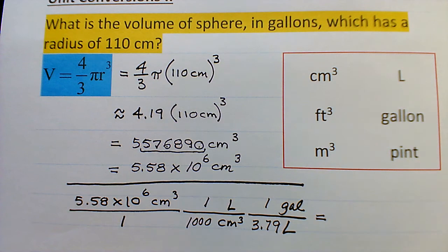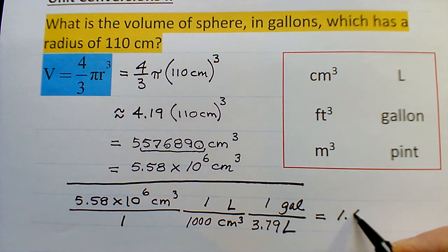And we get 1.47 × 10^3, if we're going to remain in scientific notation and pretend to have three significant figures.